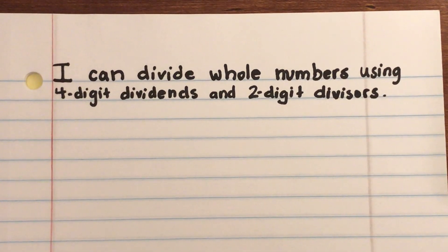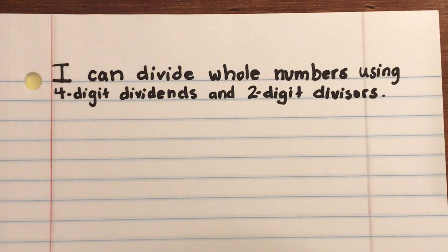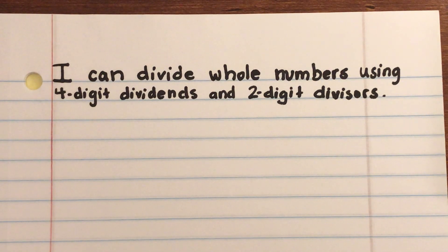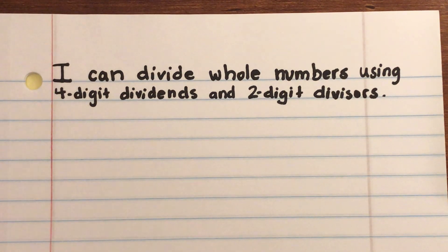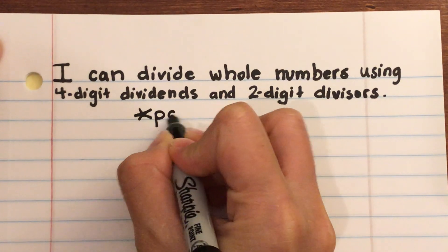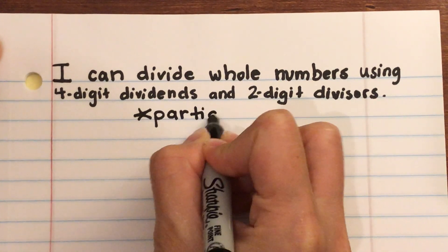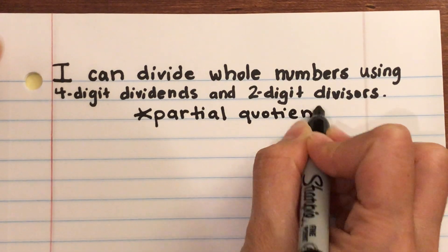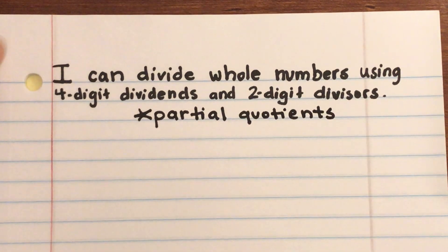Today's lesson is about division — specifically the standard: I can divide whole numbers using four-digit dividends and two-digit divisors. Before we get started, let's zone in on our focus: because there are different ways you can divide, we're going to focus on using partial quotients.